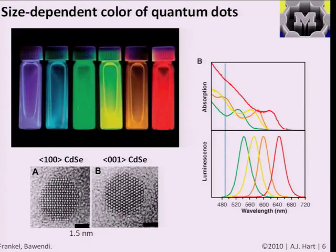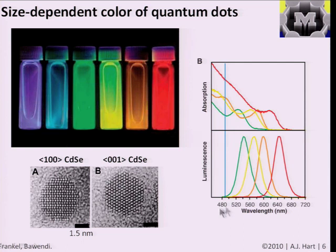We closed talking about the size-dependent color of quantum dots. When you excite one of these solutions with light where the energy exceeds the band gap of the dot, you get emission or luminescence at a well-defined peak. In an ideal case, the emission spectrum would be a delta-function-like line, but because of real processes and the distribution of sizes, you get a peak. Based on differences in size, you see a difference in the color of emission.